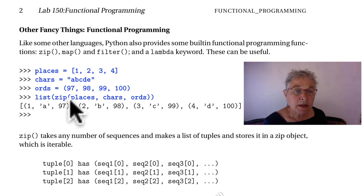This zip takes in these three identifiers which are three iterables. We see the first one is a list, a string, and a tuple. And what results then is a list of tuples and the first tuple is the first element of each of the sequences and then the second element, etc.